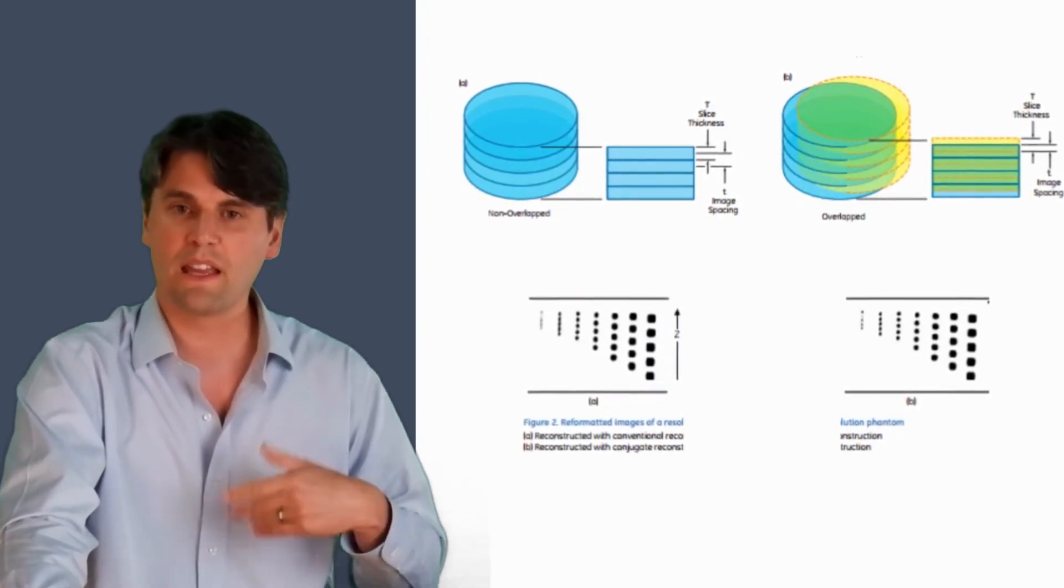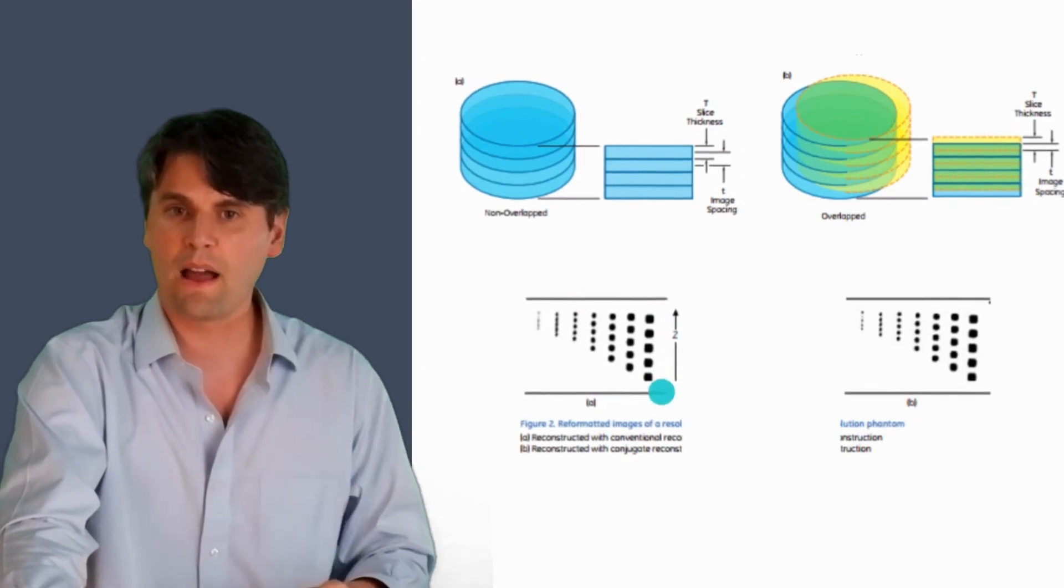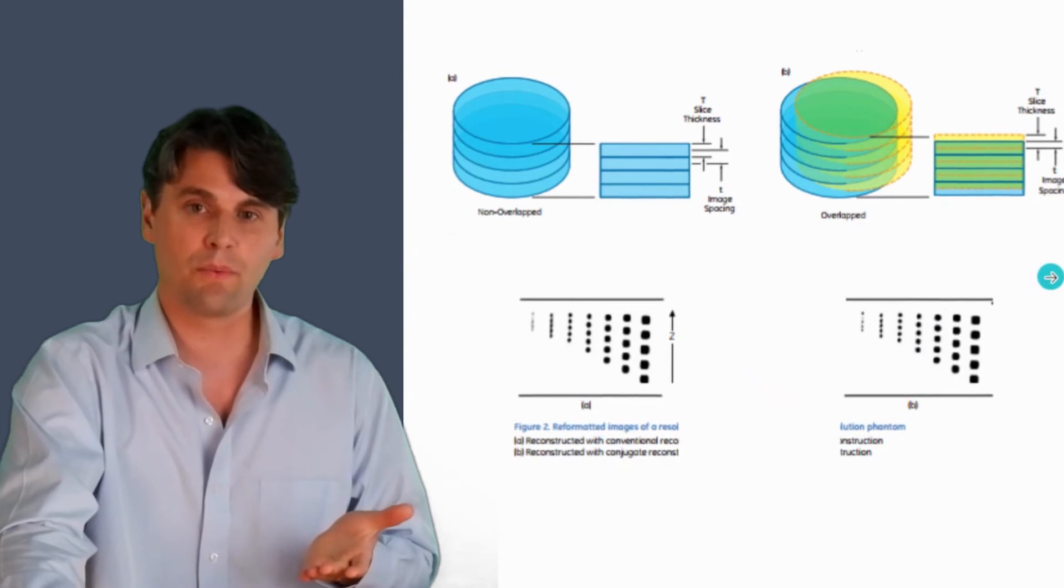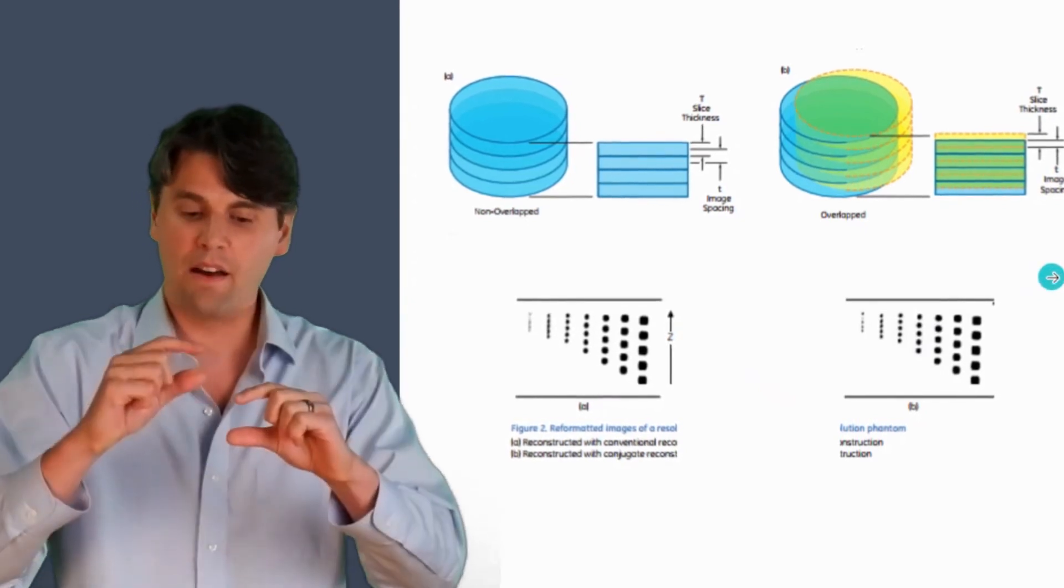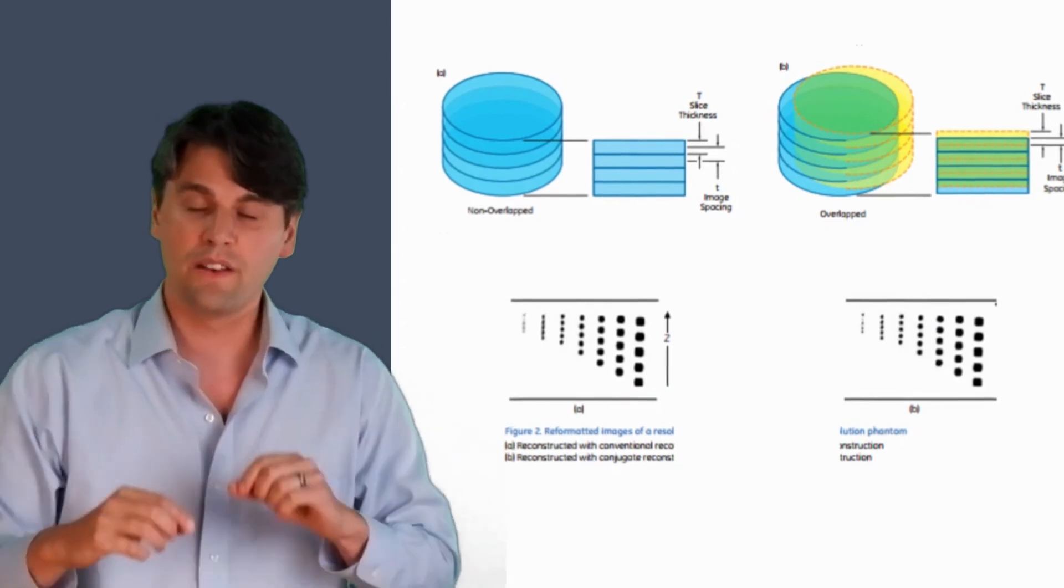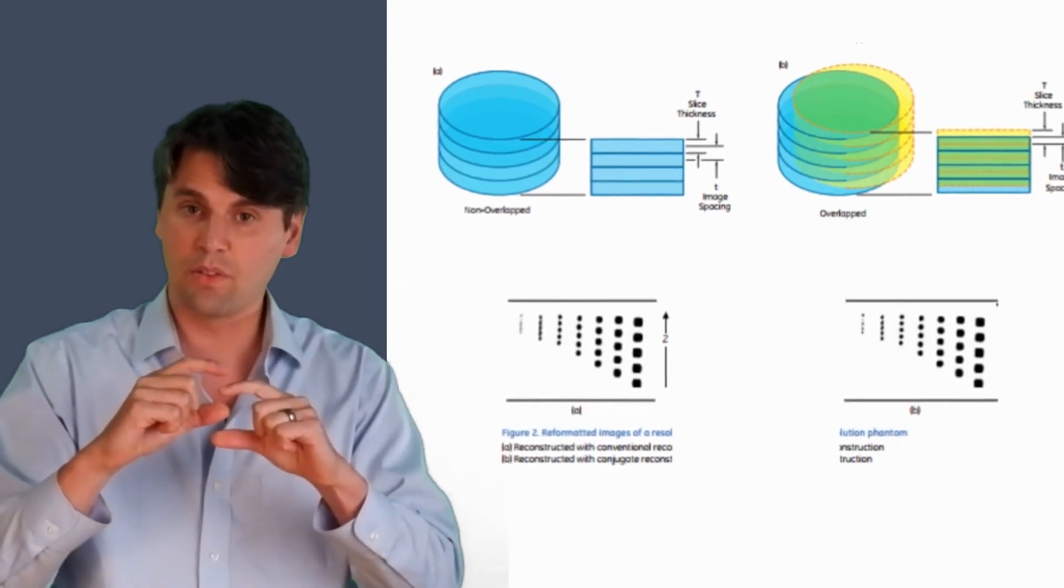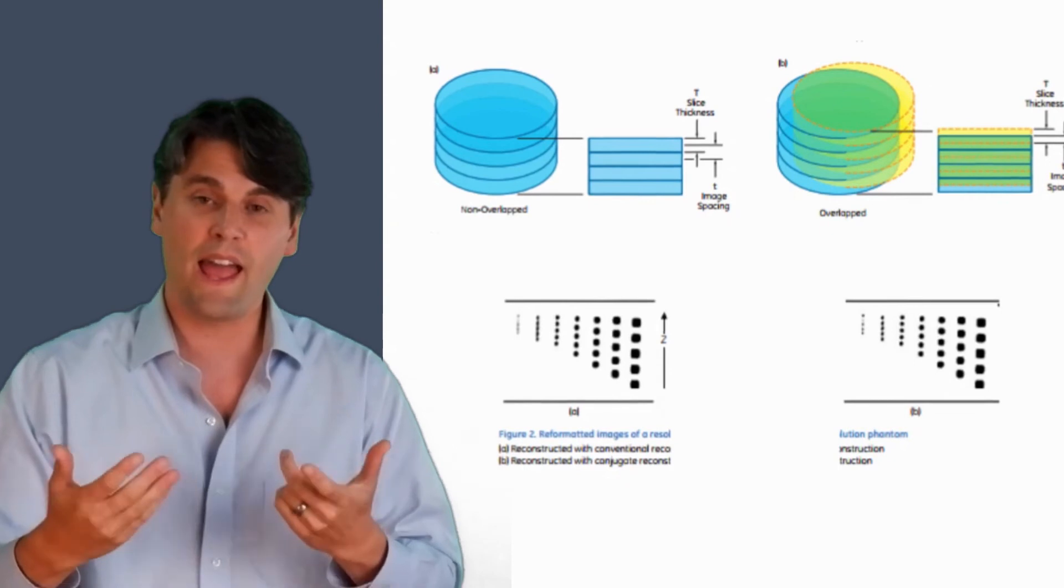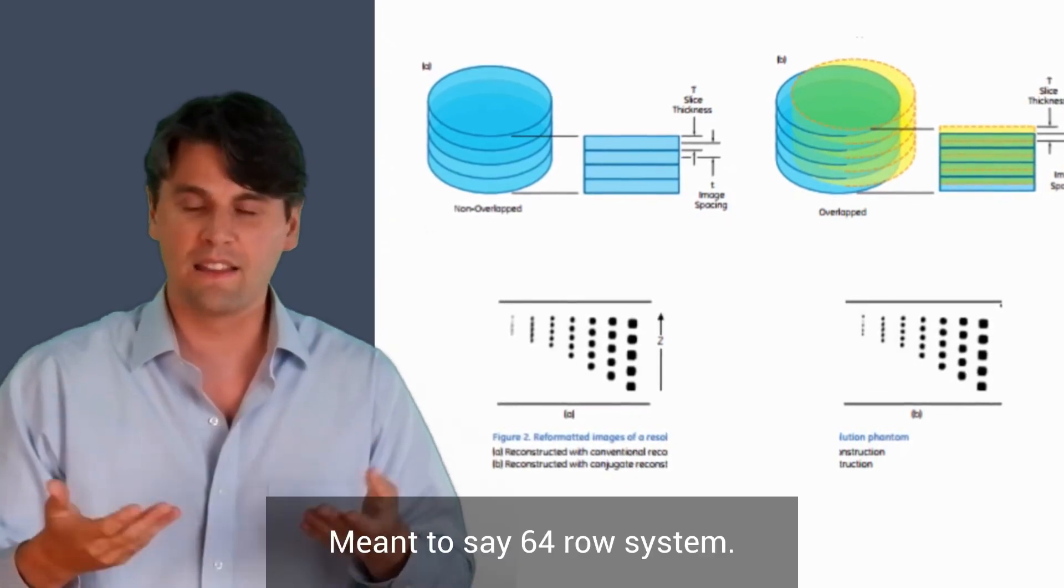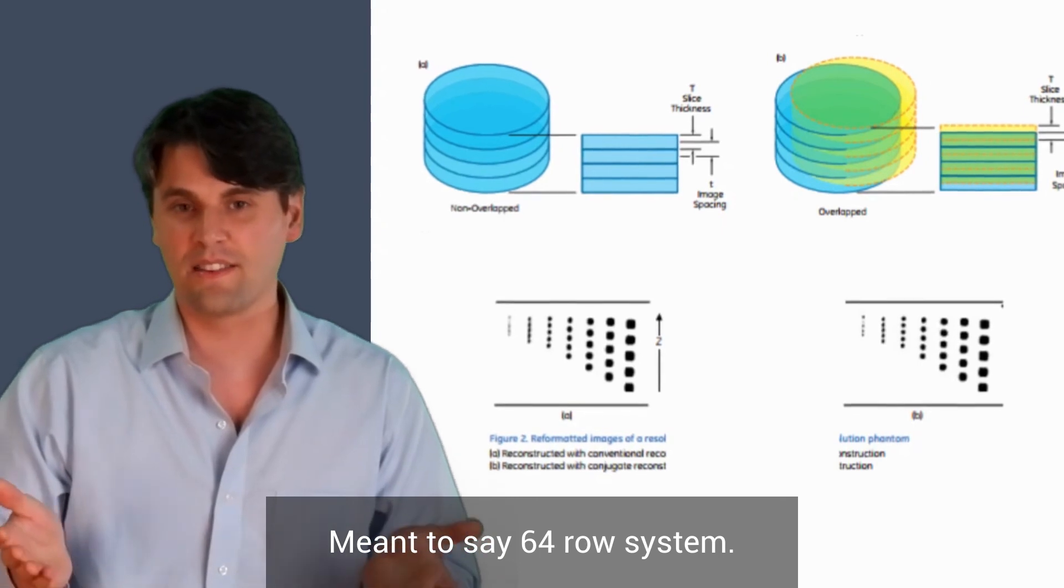Alternatively, if we use that conjugate ray reconstruction so that we can improve the reformat quality, then we need to do higher sampling in order to support that. So we're going to have actually overlap between our slices. So the difference in the interval between the two slices is actually one-half of the thickness.